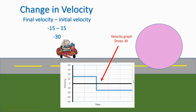Final velocity minus initial velocity — that's how you find the change in velocity. You need to know the velocity before and after the event occurs, and you can find it that way. This can be seen as a jump or a drop on a velocity graph. Hopefully this answers your questions about change in velocity, and I'll see you all in another video.